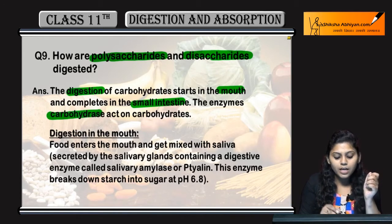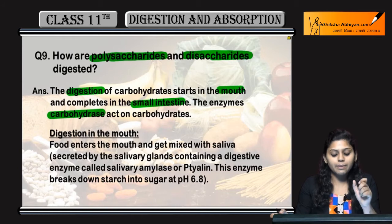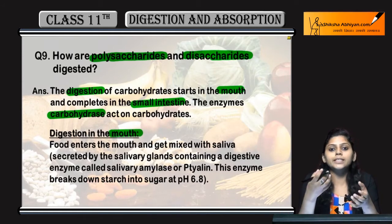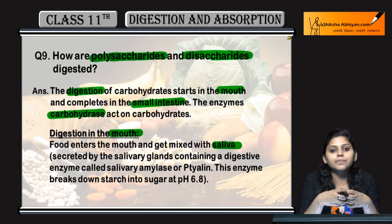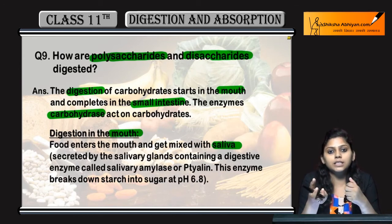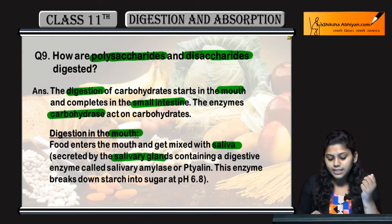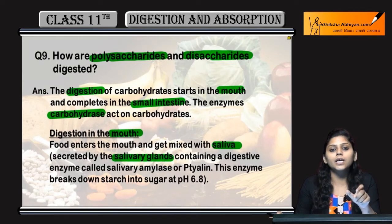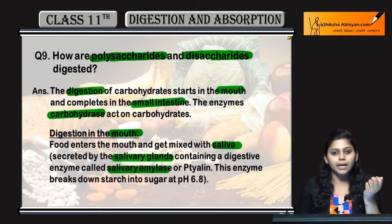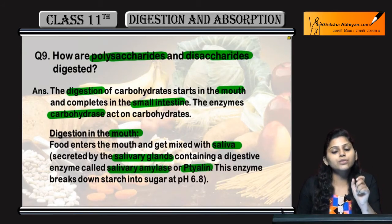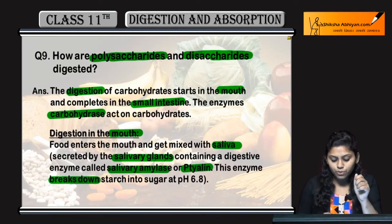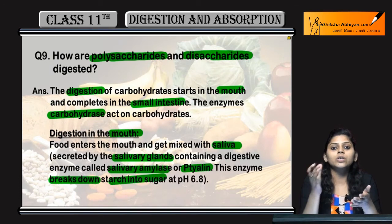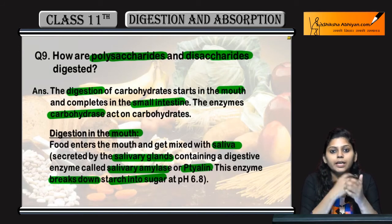In the mouth, food enters and mixes with saliva. Saliva is secreted by the salivary glands and contains digestive enzymes — salivary amylase and ptyalin. Salivary amylase breaks down starch, a large molecule, into smaller sugar molecules.